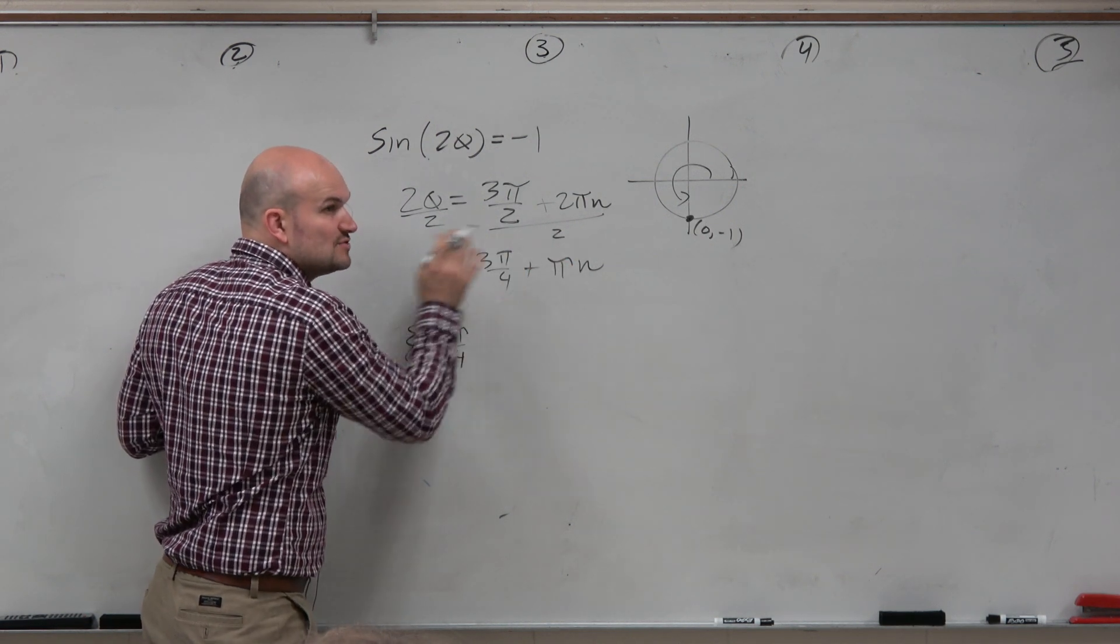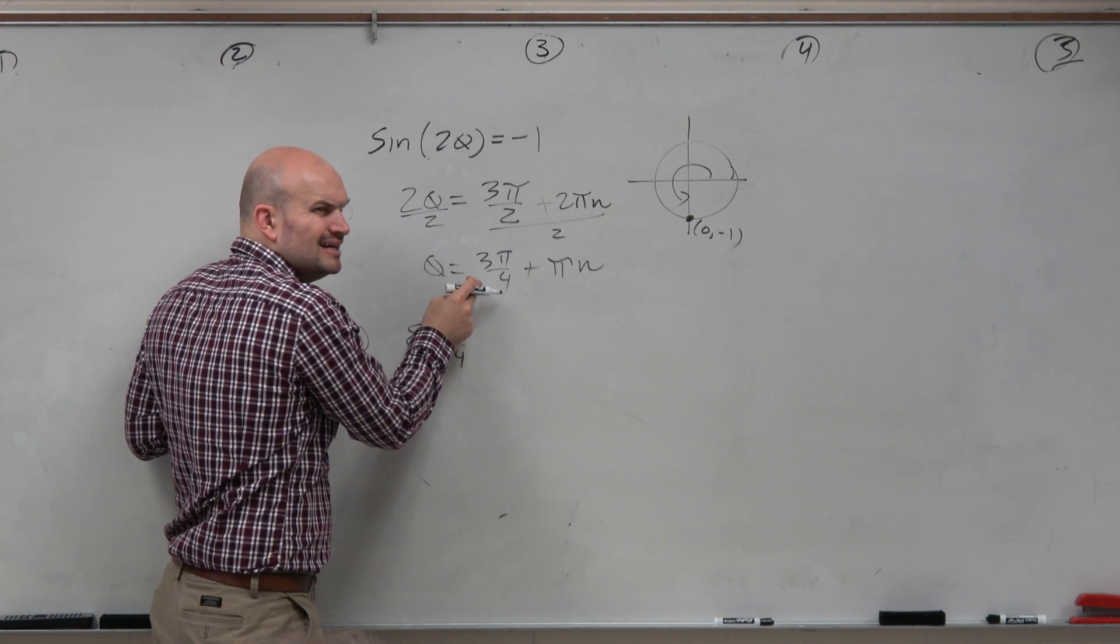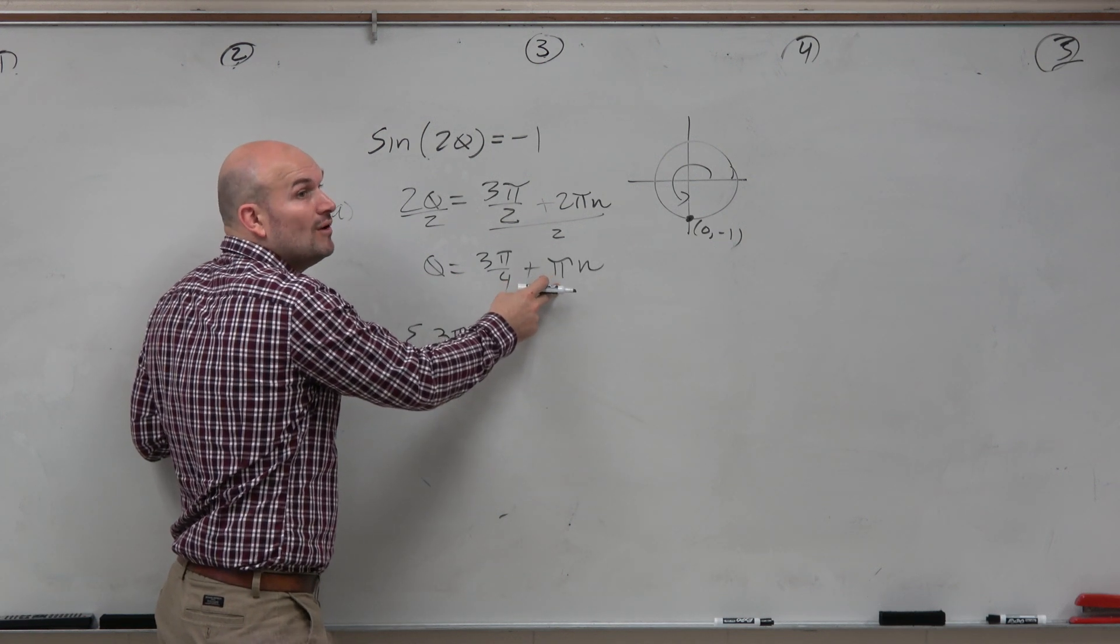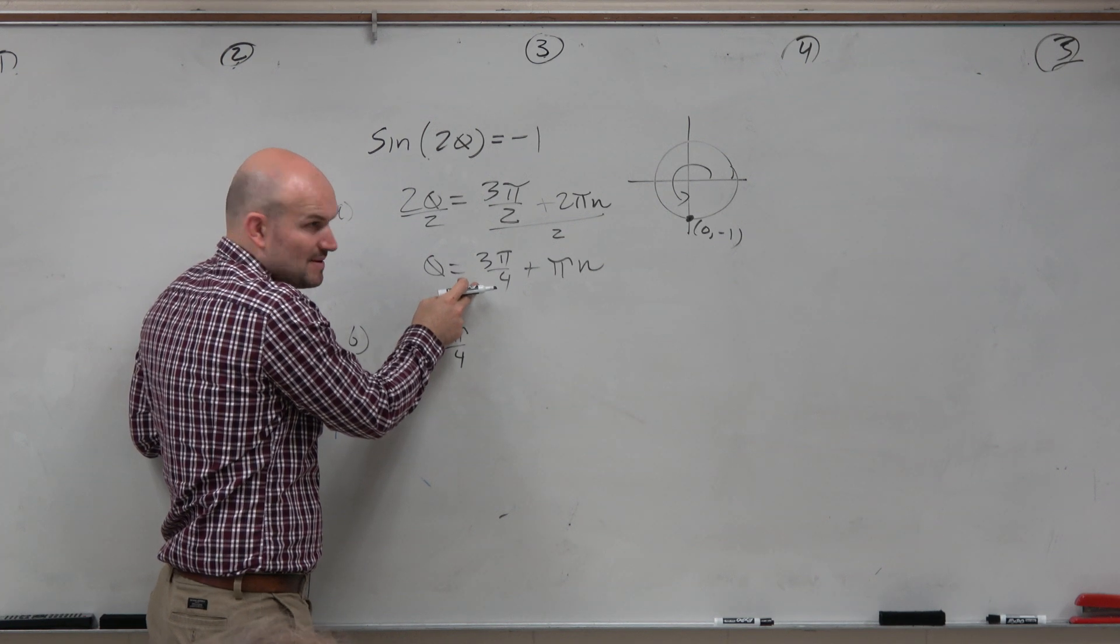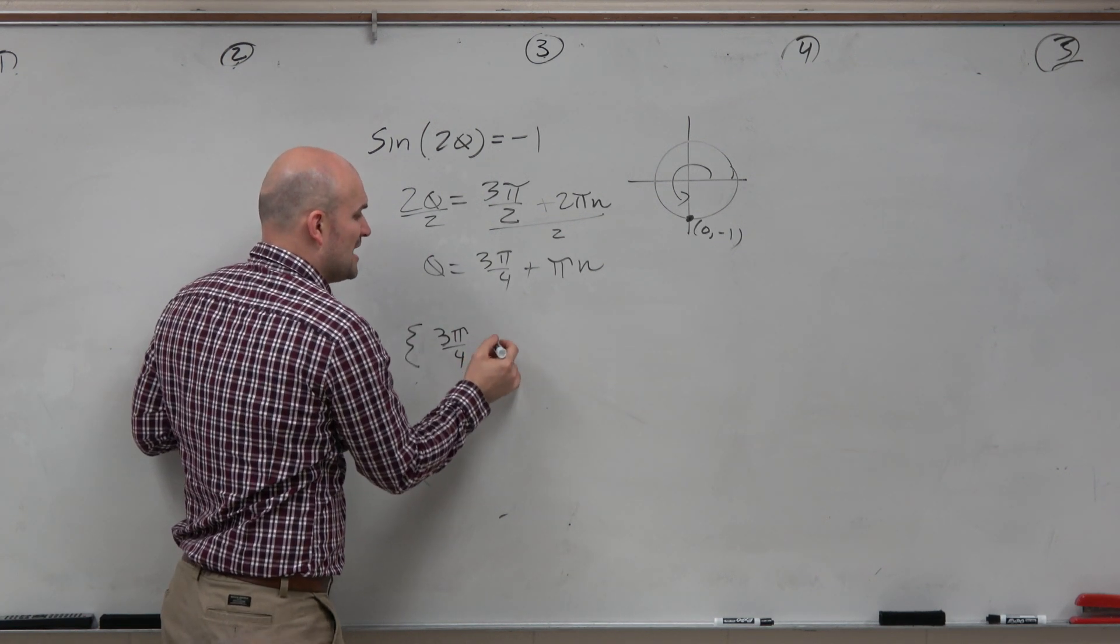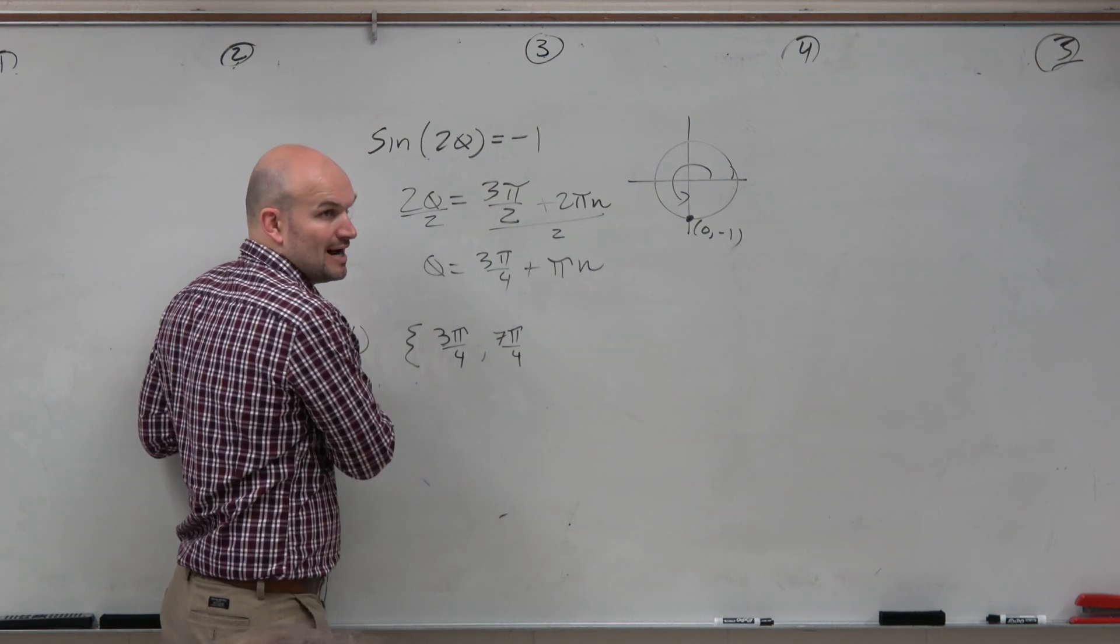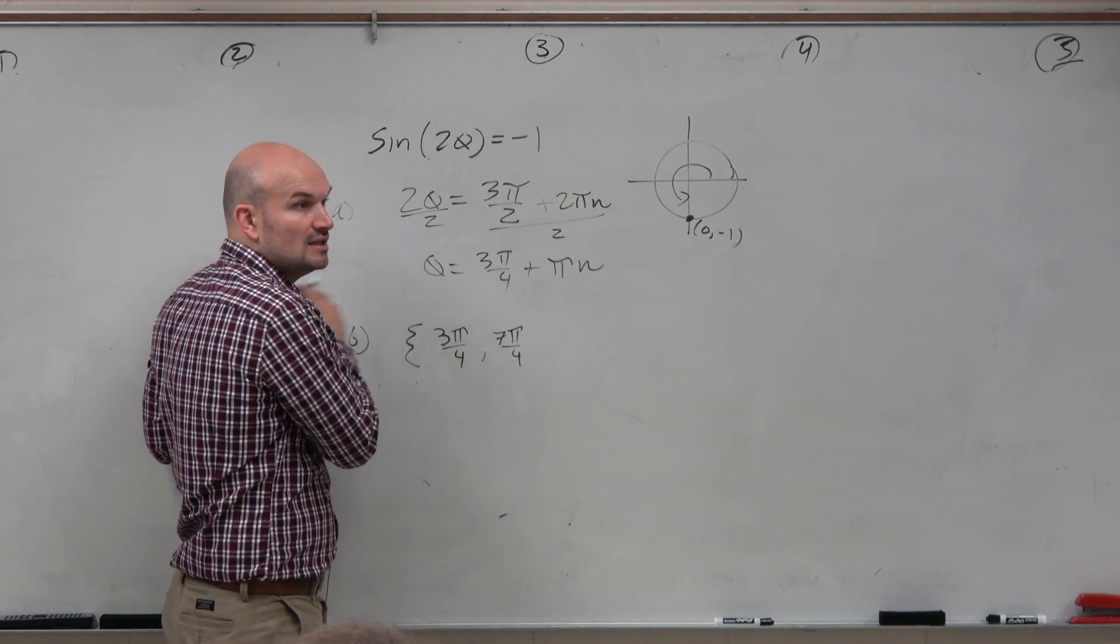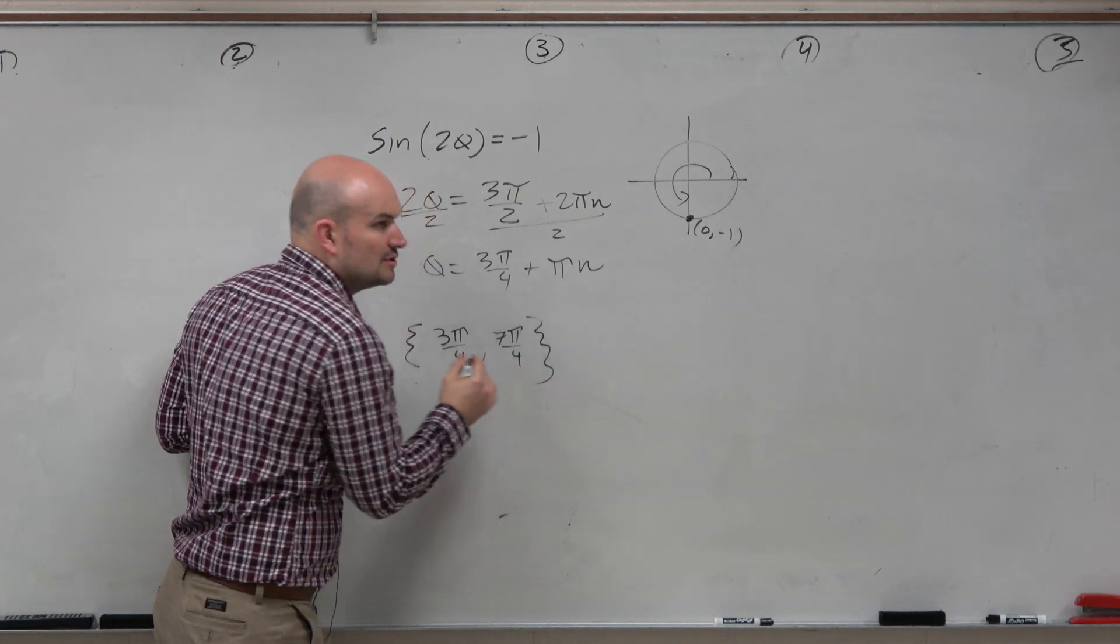What about when n is 1? Then that would be pi plus 3 pi over 4. We don't want to add pi plus 3 pi over 4. Could we want to add 4 pi over 4 plus 3 pi over 4? That's the same thing, 4 pi over 4, same thing as pi. So 4 pi over 4 plus 3 pi over 4 is 7 pi over 4. Is that still within our interval of 0 to 2 pi? Yes. And then if we add 4 pi over 4 again, that'd give us 11 pi over 4. But that's over. So those are the only two solutions.